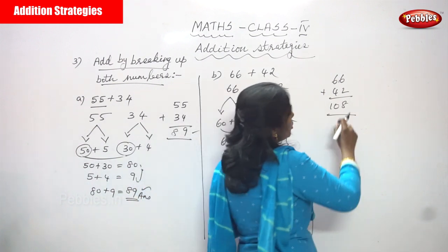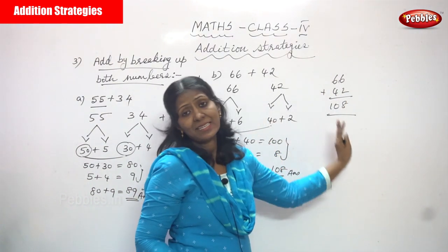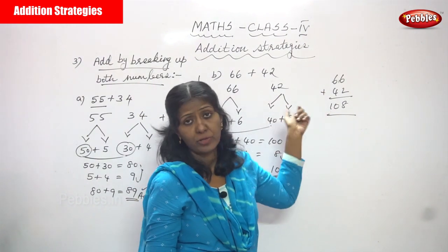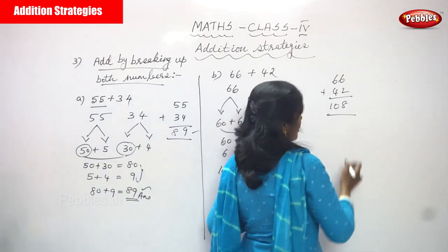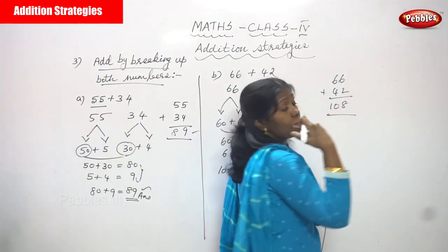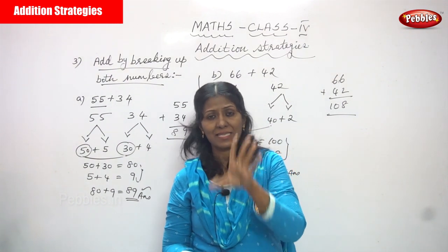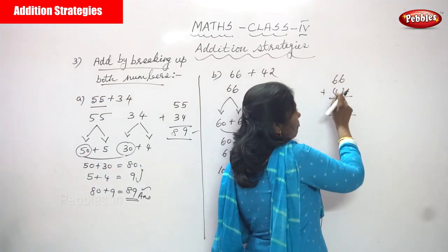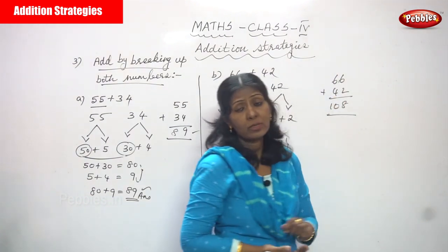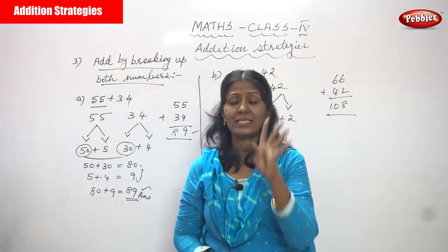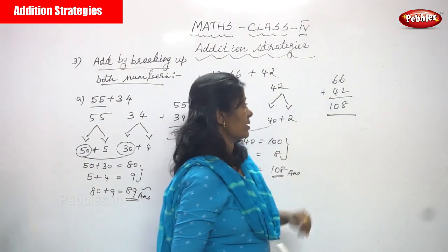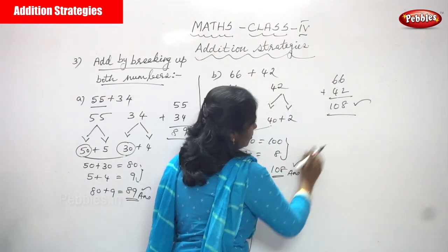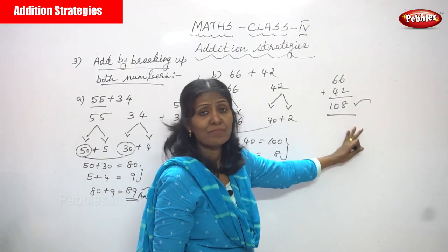Now, the same sum done as a general simple addition — no strategy, just normal addition. 6 plus 2: 6 in the mind, 2 on the fingers — counting gives 8. Next, 6 in the mind, 4 on the fingers — counting gives 10, so we write 10. The answer is 108. Both methods give 108, so both are correct.